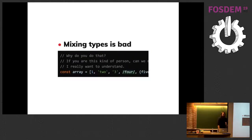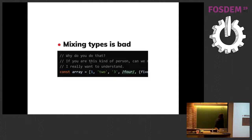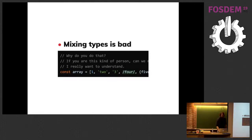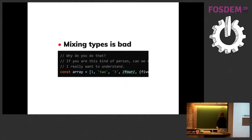Third tip: mixing types is really bad in JavaScript — don't do it. Here's an example of a terrible array: it contains numbers, strings, strings that look like numbers (which will confuse V8), a regex, and an object all mixed together. If someone does that, honestly, I want to meet you, because I don't understand why you would want to do that.